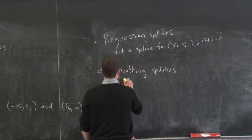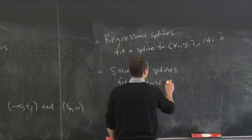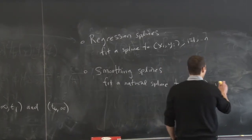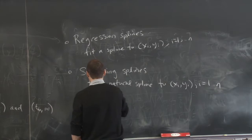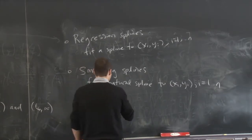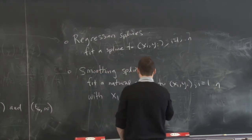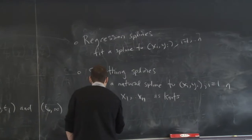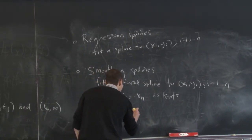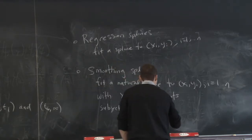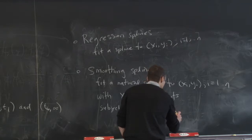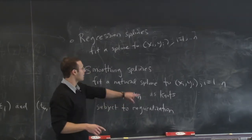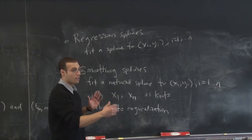Smoothing splines fit a natural spline to training data xi, yi. The distinction is that they don't come with pre-specified knots — they automatically use x1 through xn as the knots. They also use regularization: not only do they fit a natural spline with knots at the data points, but they also do it subject to regularization. In terms of the coefficients, it's an L2-type regularization. If we write beta for the coefficients, the regularizer is something like beta transpose times a matrix times beta.